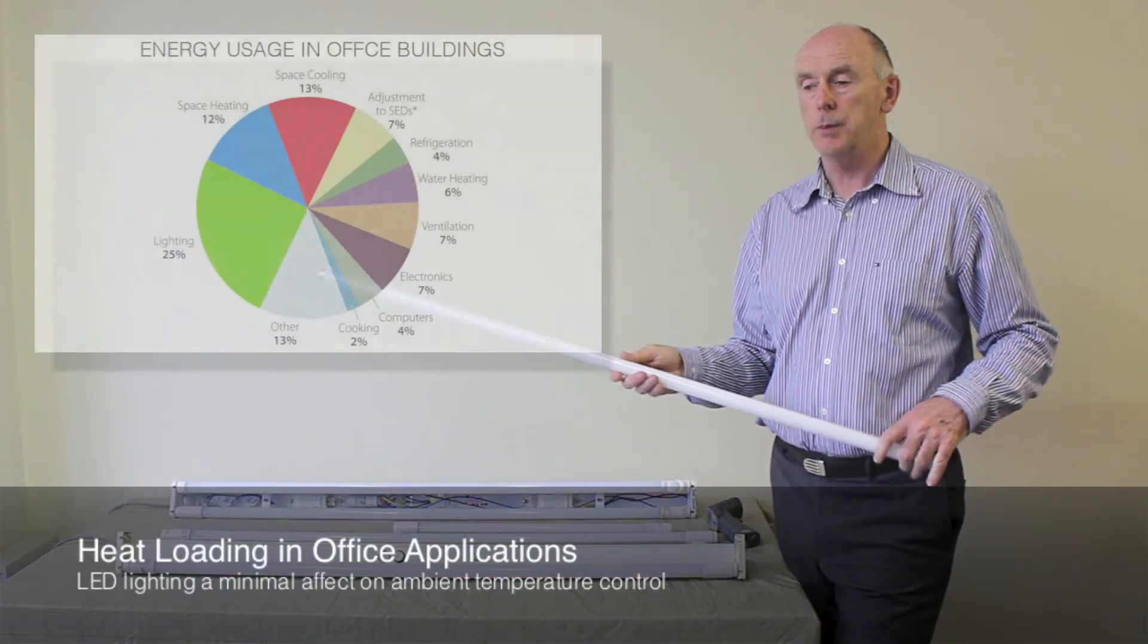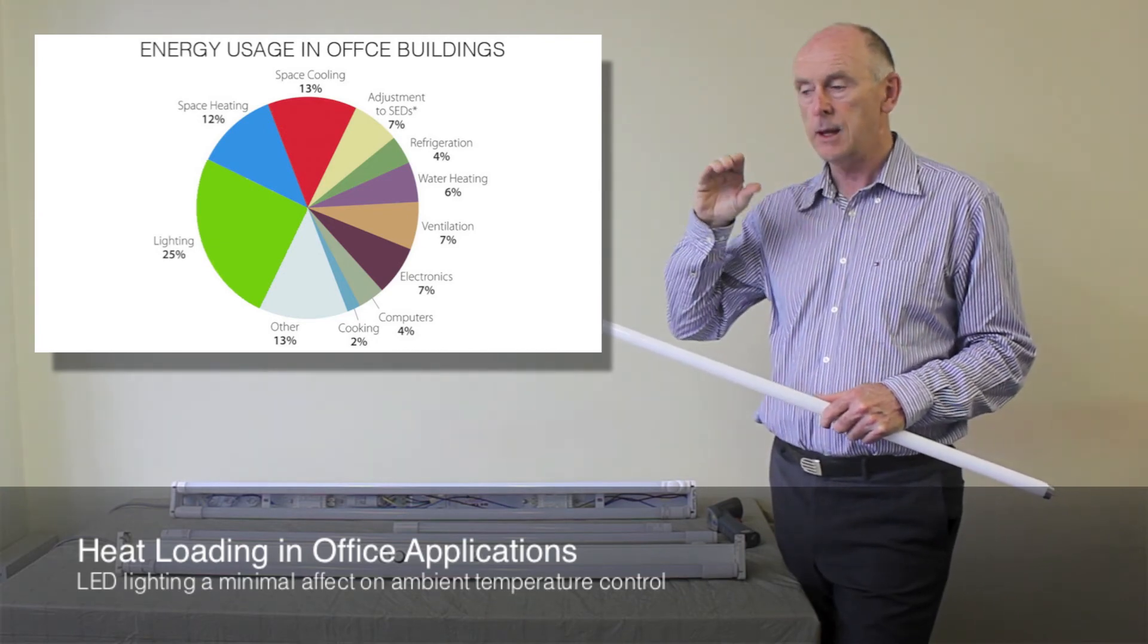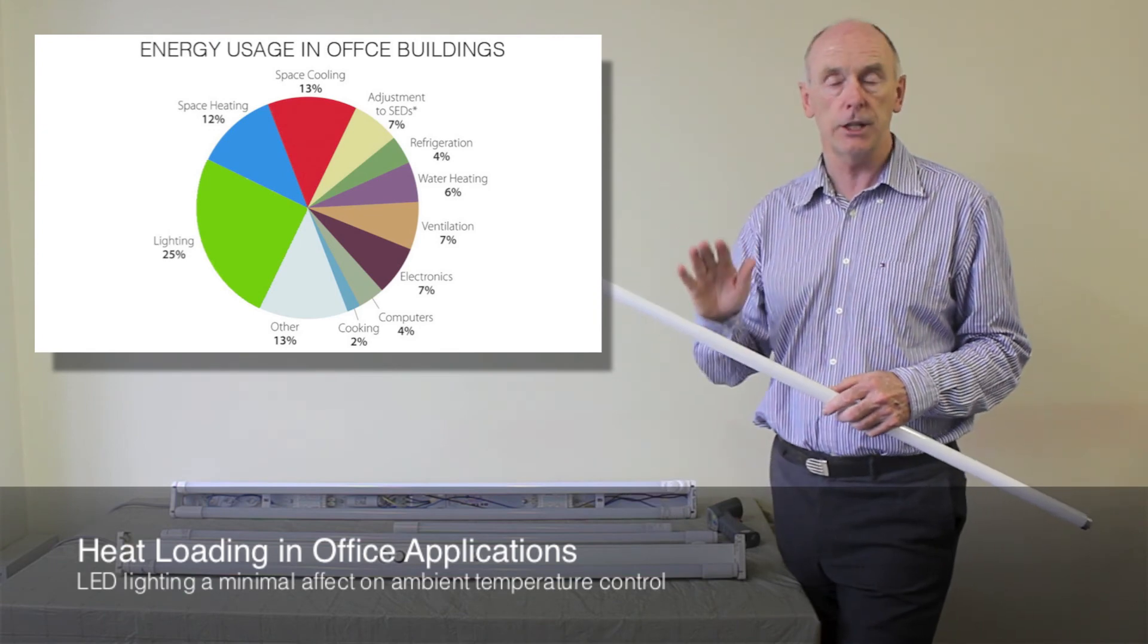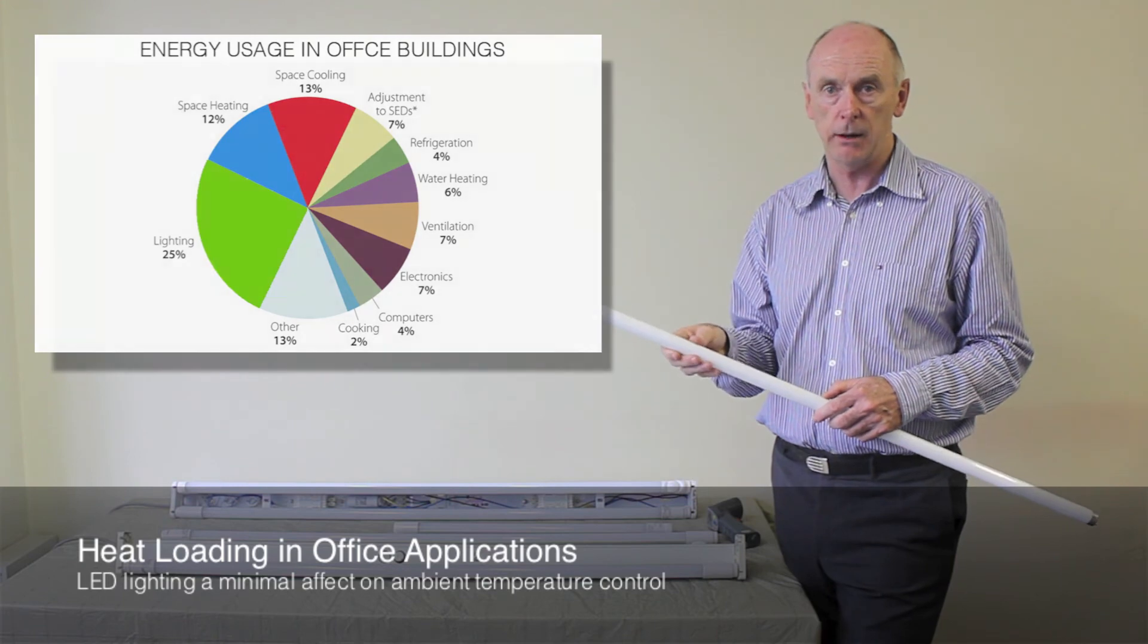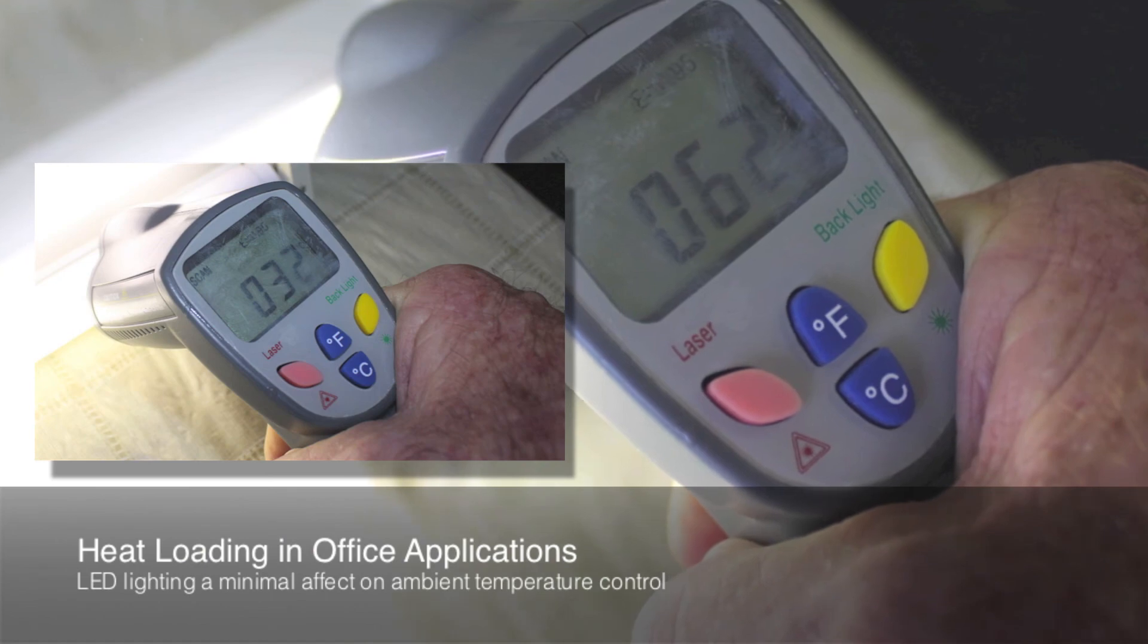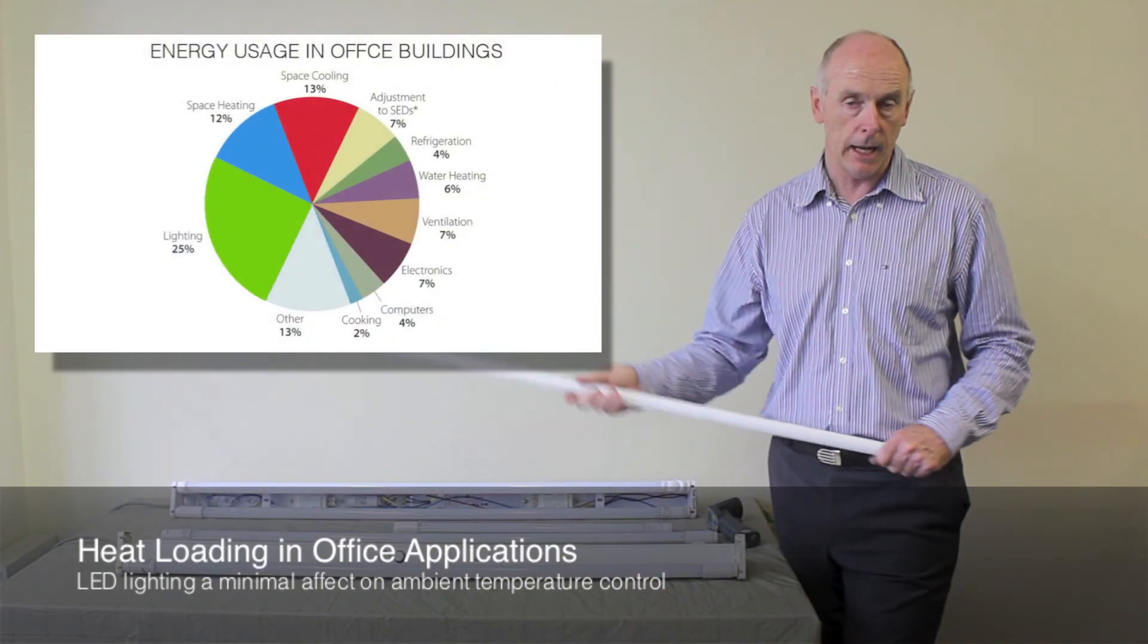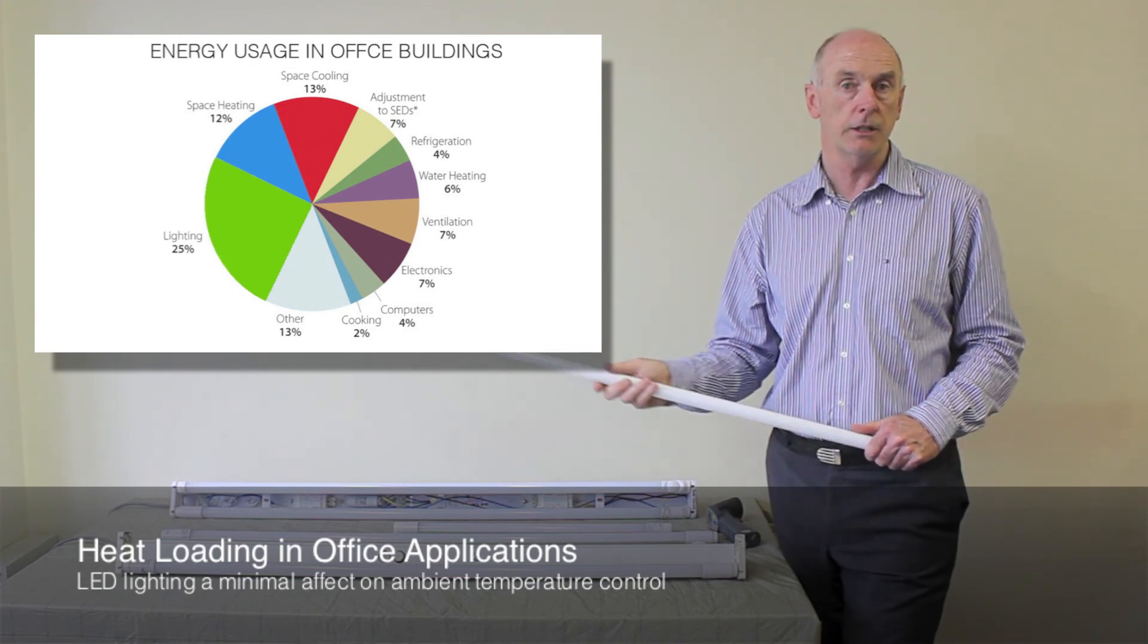The other thing that a lot of people don't realise is that with an LED tube, because it runs so much cooler, you will actually have savings if you are in an air-conditioned environment, because the effect of the heating, not only of the fluorescent tube, but also of the magnetic ballast, or the ballast that actually controls the power to the fluorescent tube, is getting very hot. With the LED driver, you've got a temperature rise maximum of around about 25 degrees above ambient. As against with a magnetic ballast, you've probably got a temperature rise of at least 80 degrees or 90 degrees above ambient. That is loading your air-conditioning system in an office.